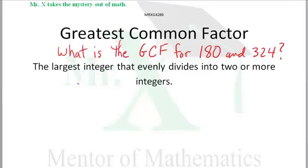For example, what is the greatest common factor for 180 and 324? The largest integer that evenly divides into both of those numbers. 180 and 324.